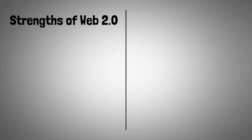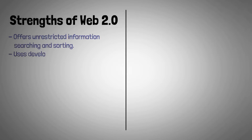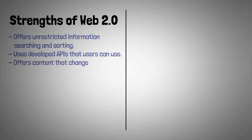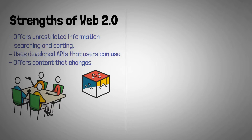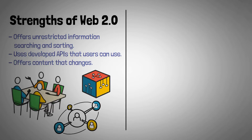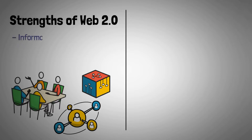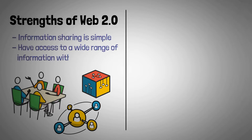The strengths of Web 2.0 include unrestricted information searching and sorting, developed APIs that users can use, and content that changes dynamically. It has increased social use of content, allowing people to participate in discussions, share data with friends and family, and communicate with people worldwide. You can easily share information and access a wide range of information with a single click.